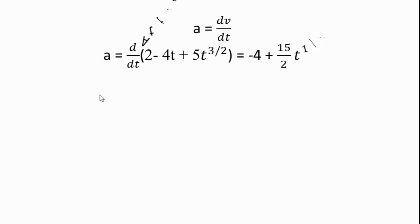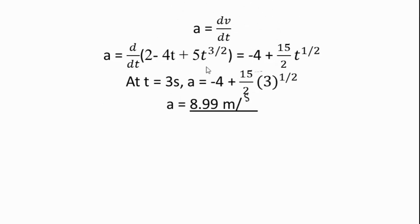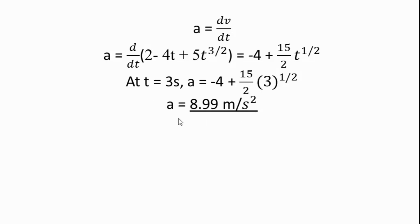We differentiate the velocity equation v = 2 - 4t + 5t^(3/2) with respect to time. The derivative of the constant 2 is zero, the derivative of -4t is -4, and applying the power rule to 5t^(3/2) gives (3/2)×5×t^(1/2), which is (15/2)t^(1/2). Substituting t = 3 seconds: a = -4 + (15/2)×(3)^(1/2). The value of acceleration becomes 8.99 meters per second squared.